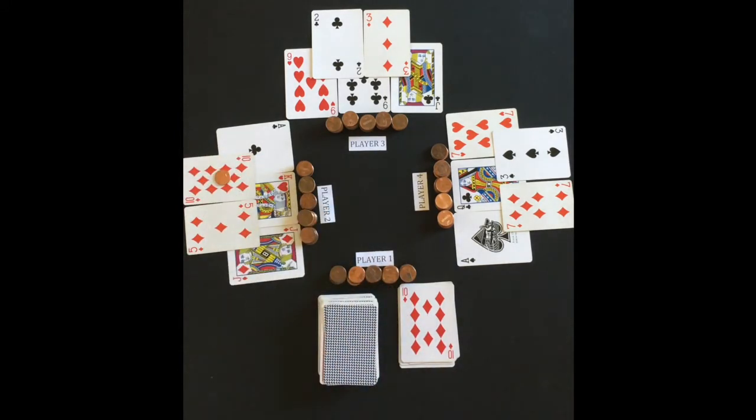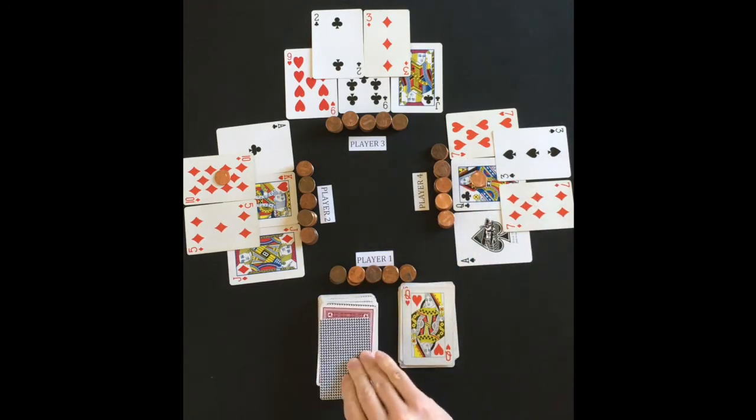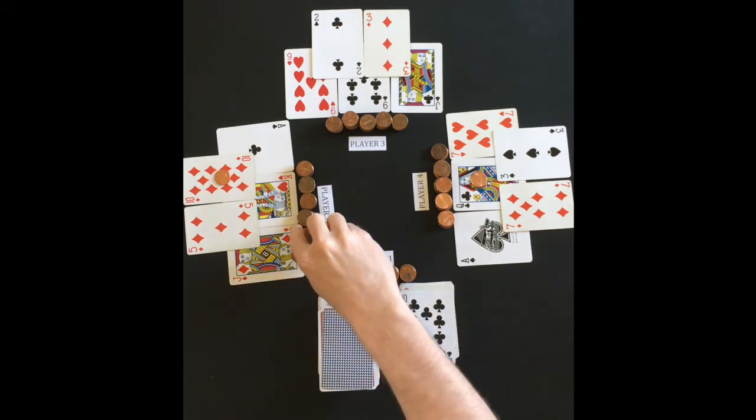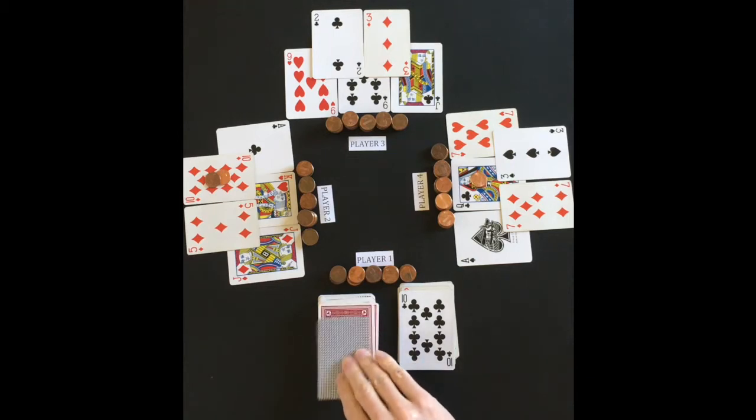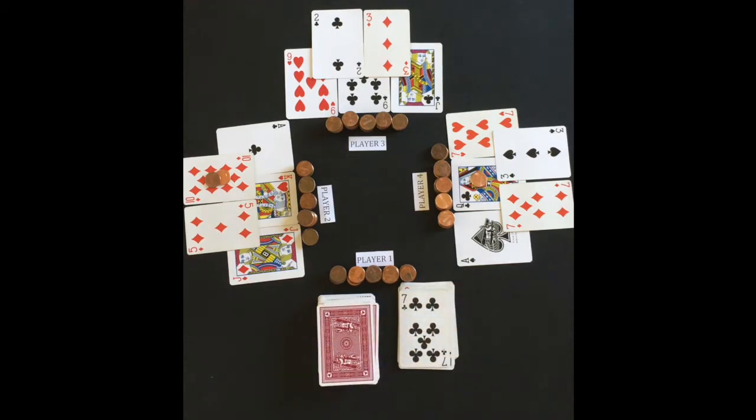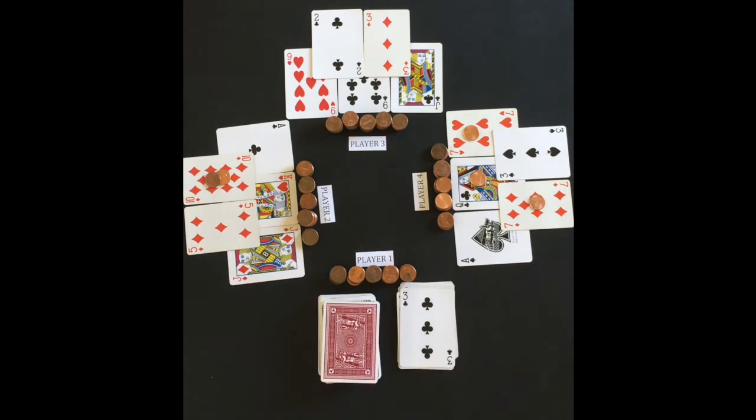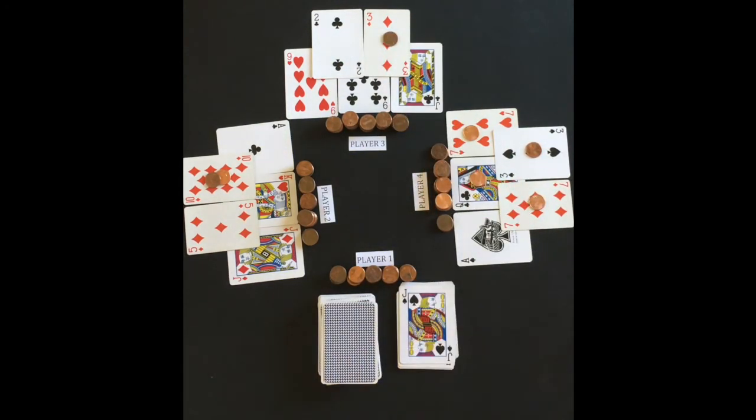Player 2 puts a penny on his 10 for the first flip. If a card is repeated by the dealer, the player will add an additional penny to the card of similar rank. Player 2 adds another penny to his 10 when it is flipped again. If a player has multiple cards with the same rank, a penny will be placed on each one when called by the dealer. Player 4 will put 1 penny on each of his 7s as it was flipped. Play continues until a player gets a bingo by having at least one penny on each of his cards.